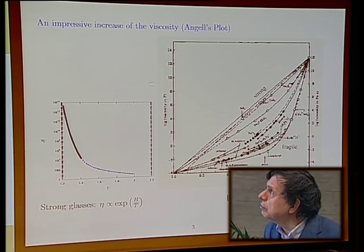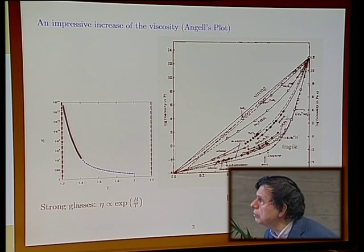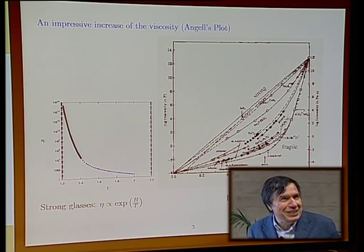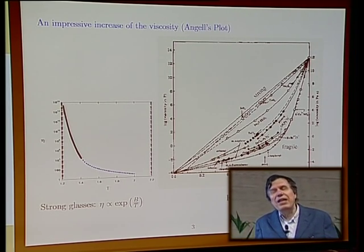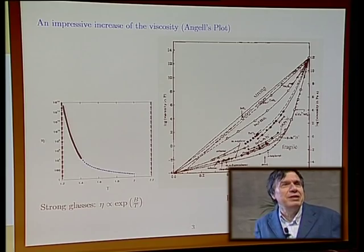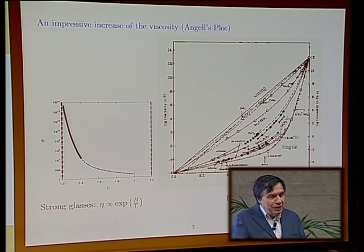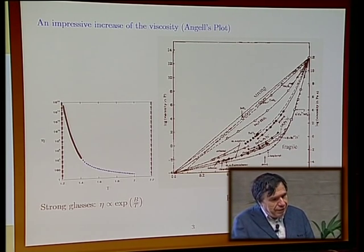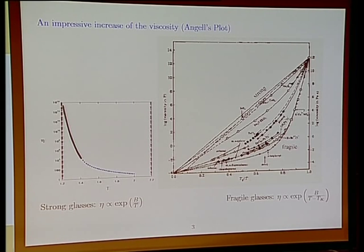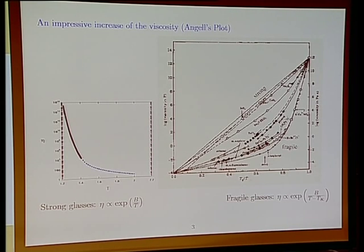A typical thing that you can measure in glasses is viscosity. Everyone that has been to Venice has seen people working to construct glasses and glassware. You see that at certain moments the glass is very liquid, and when it cools the viscosity increases — you can still manage to deform the glass. Of course, if you try to deform a glass at room temperature, it will break.